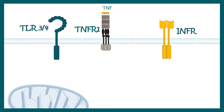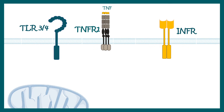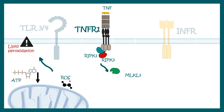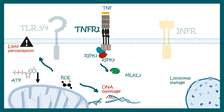The necroptosis pathway can be triggered by several signaling mediators at the receptor level, including TLR3, TLR4, TNF receptor, and interferon receptor. Key downstream signaling molecules include RIPK1 and RIPK3, both kinases involved in several aspects of the necroptosis pathway. Another important kinase is MLKL. Downstream events include lower ATP production, increased ROS generation, lipid membrane damage leading to lipid peroxidation, DNA damage, and leakage of lysosomal enzymes, ultimately causing cell death.